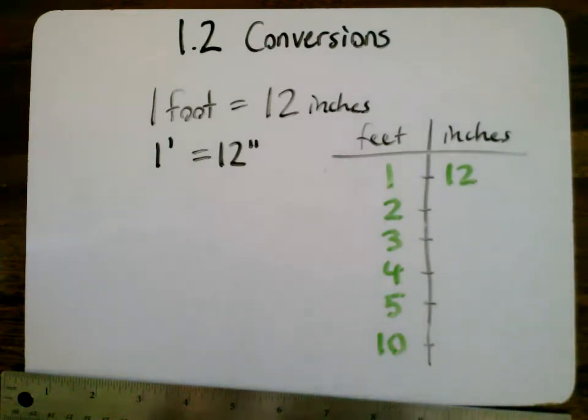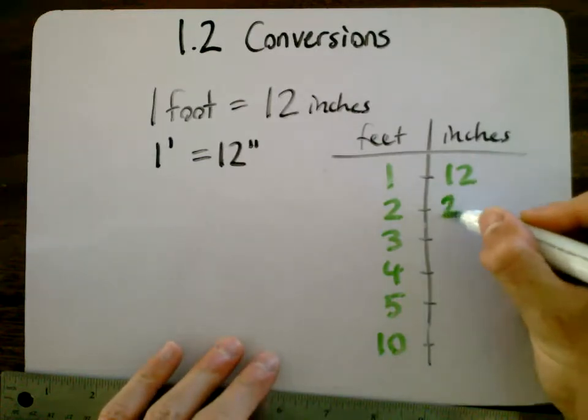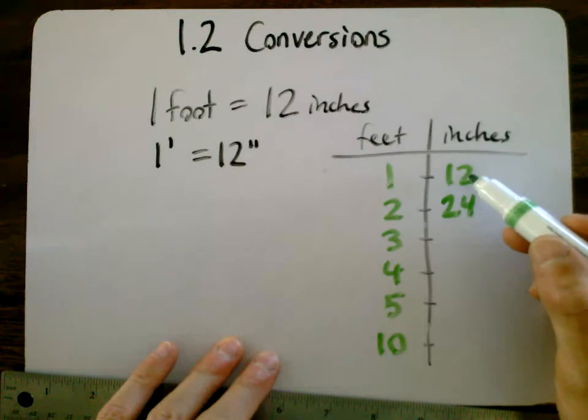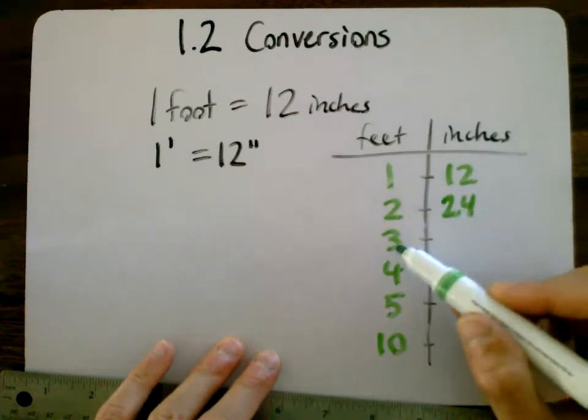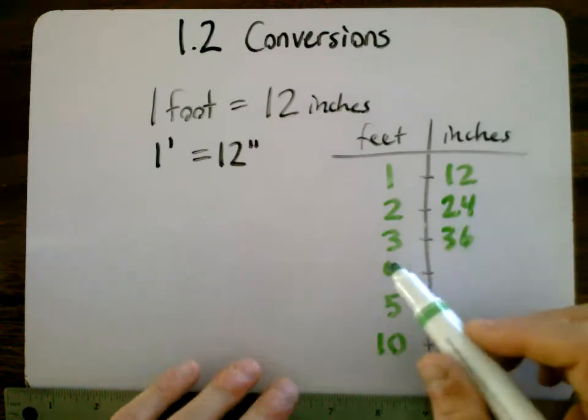Okay, so what you should have come up with is that two feet is 24 inches. You can just multiply 12 by 2 to get that. So 12 times 3 is 36 inches for 3 feet.